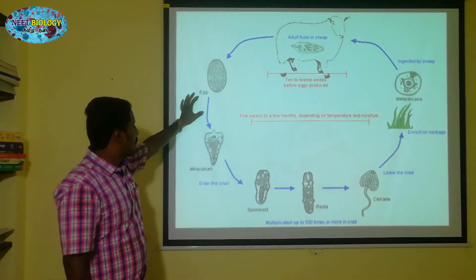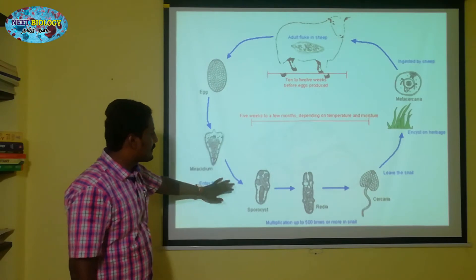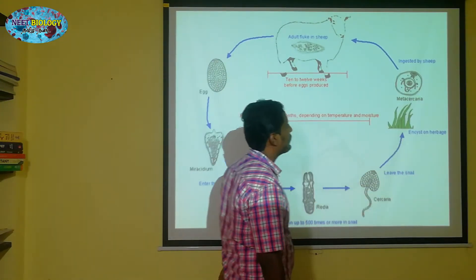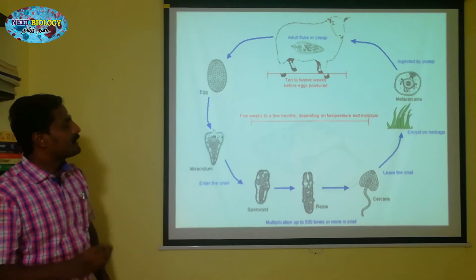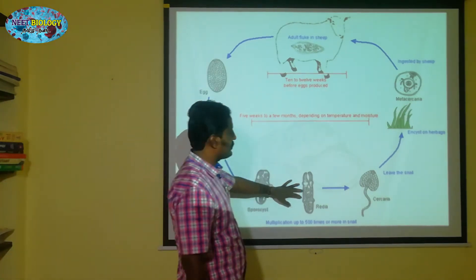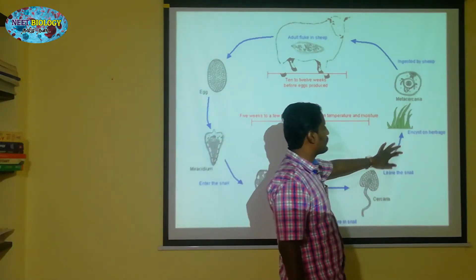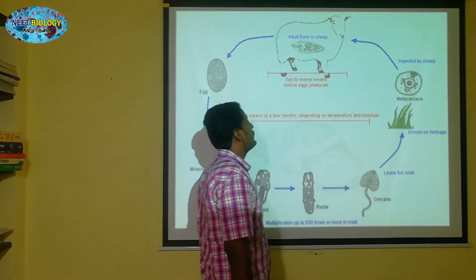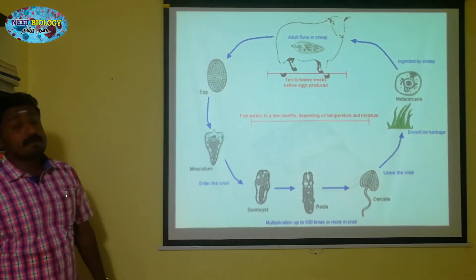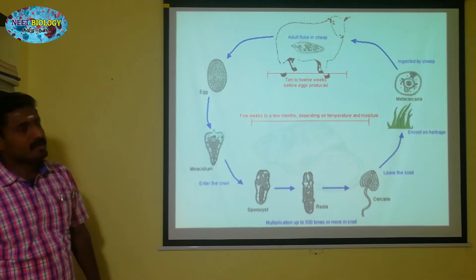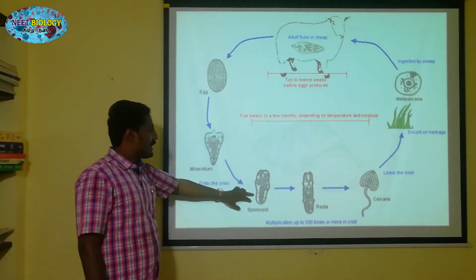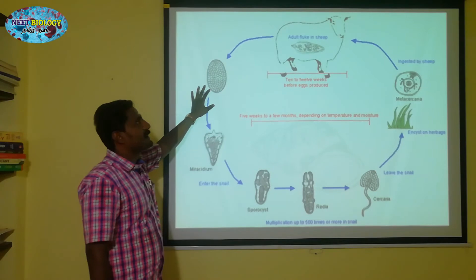If you look at that, there are several stages. The egg is a larva. This is a reproductive cycle — the reproductive cycle of the liver fluke. This larva is actually formed after the fertilization.